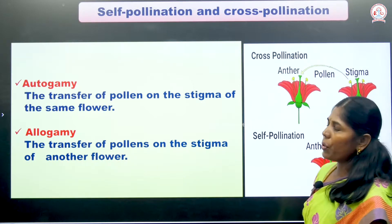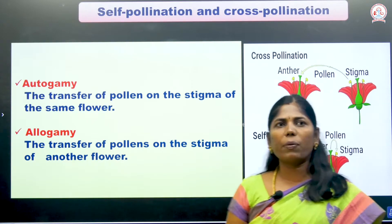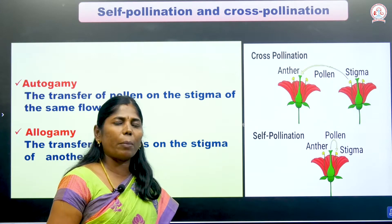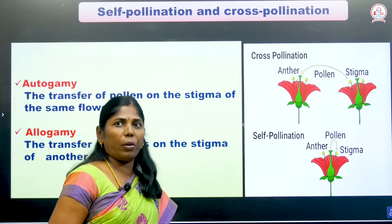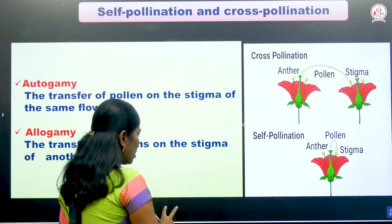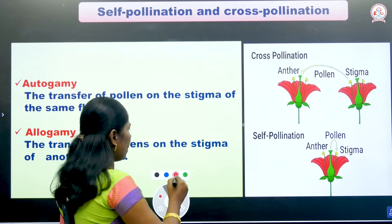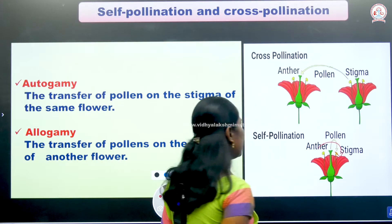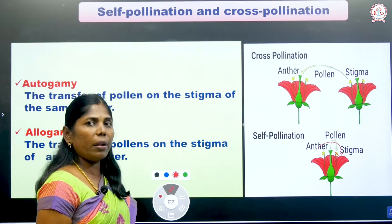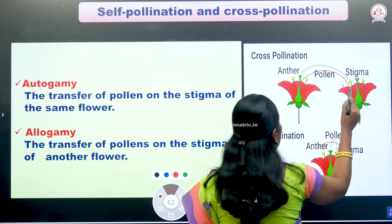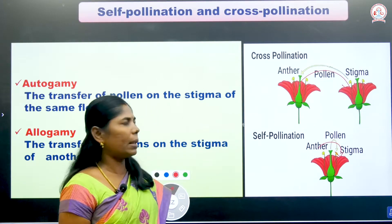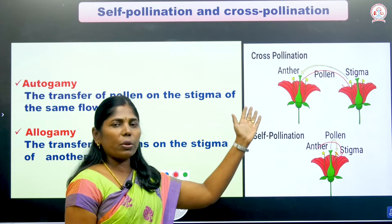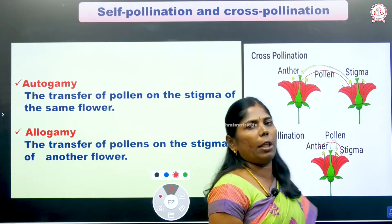Next, the difference between autogamy and allogamy. Autogamy means the transfer of pollen grains from anther to stigma of the same flower — that is self-pollination. Allogamy means the transfer of pollen grains from anther to stigma of a different flower in a different plant — that is cross pollination.